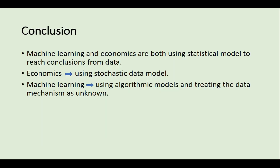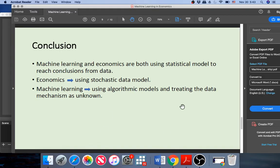Conclusion. There are two cultures in the use of statistical modeling to reach conclusions from data sets. First, assume that the data are generated by a given stochastic model. Second, use algorithmic models and treat the data mechanisms as unknown. Nowadays, you can see more economics papers that are using machine learning techniques. Machine learning is another set of tools to help solve problems.